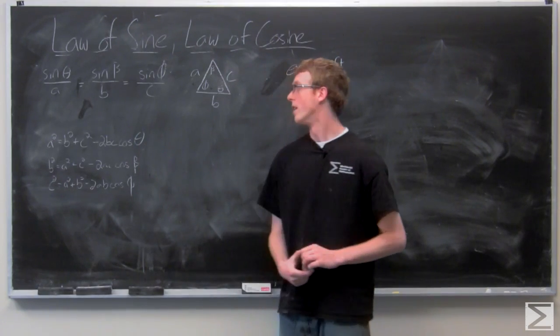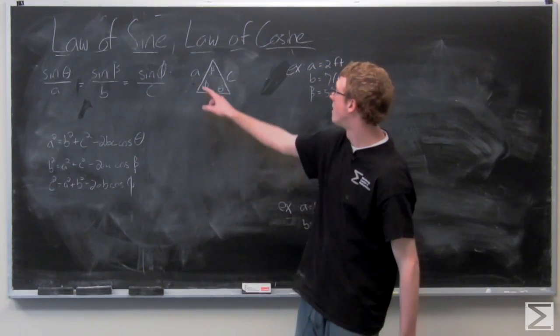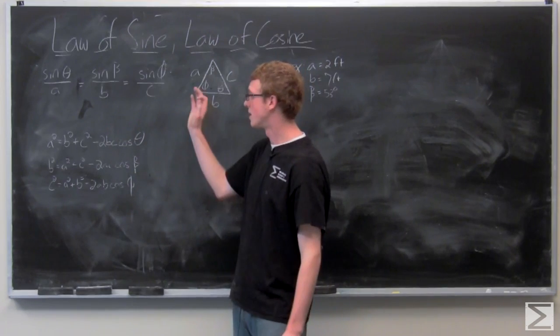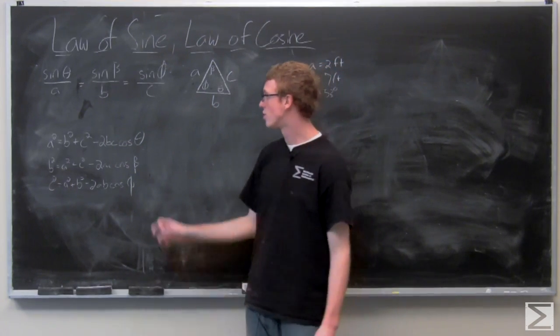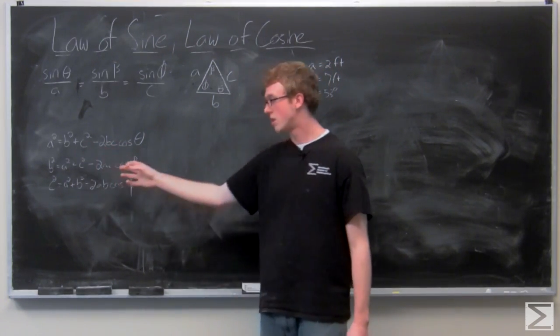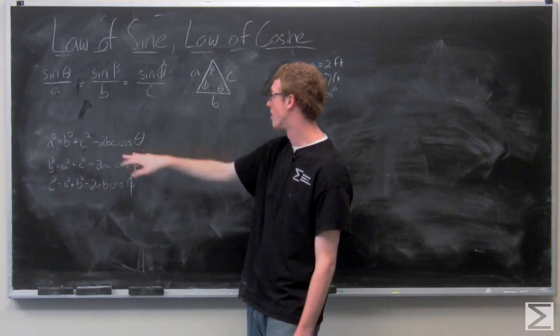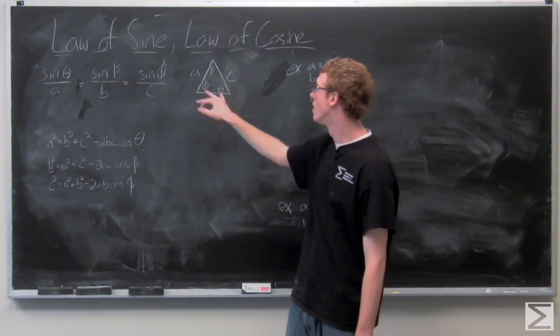So we have a squared, this side, equals b squared plus c squared, the other two sides, minus 2bc, which is those two sides, times the cosine of theta, which is the angle opposite of A.